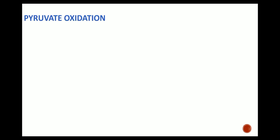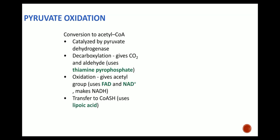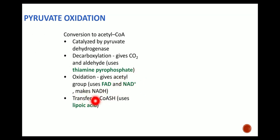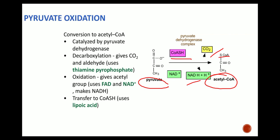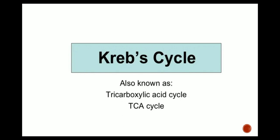In pyruvate oxidation, it is the conversion to acetyl coenzyme A, catalyzed by pyruvate dehydrogenase. Decarboxylation gives CO2 and aldehyde, using thiamine pyrophosphate. Oxidation gives acetyl groups, using FAD and NAD+ as the hydrogen acceptor, making NADH. Transfer to CoASH uses lipoic acid. In the diagram, pyruvate is converted into acetyl coenzyme A with liberation of NADH and CO2, and with the use of CoASH.